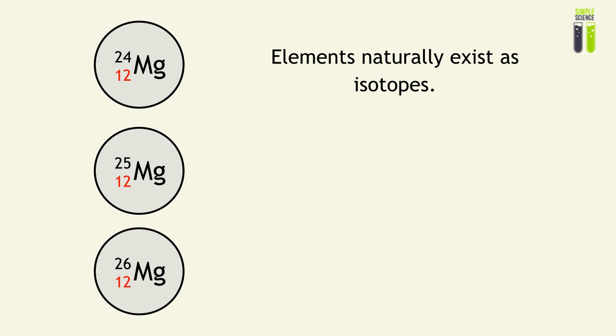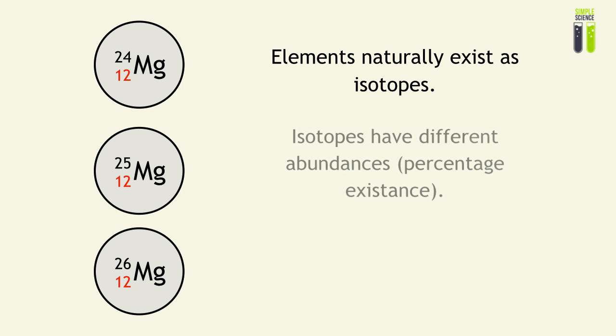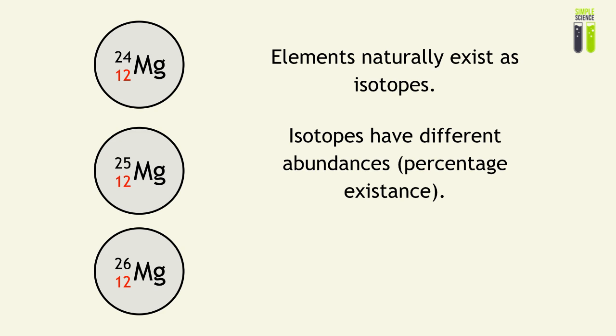But elements in the world naturally exist as isotopes. And these isotopes have different abundances. This is basically a percentage value of how each of the atoms exist in the world.